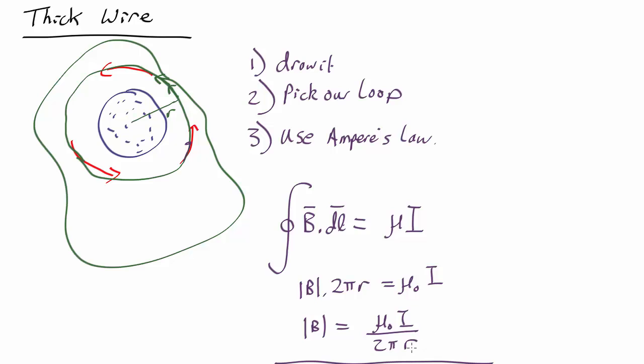This would be very hard to calculate using the Bio-Savart law because you might have to break the charge over the thick wire into the bit of charge in the middle, the bit of charge from over here, the bit of charge from over there. You might have to integrate over a whole bunch of different charges.